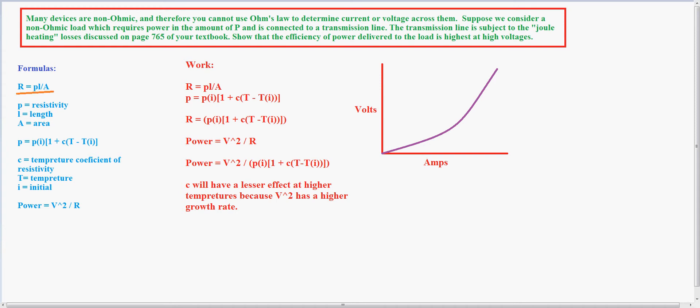The formula is where R is equal to the resistivity times the length divided by the area, this equation right here. The resistivity is equal to the initial resistivity multiplied by 1 plus C, which is the temperature coefficient of resistivity, which is different for every material, times temperature minus temperature initial.